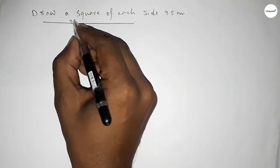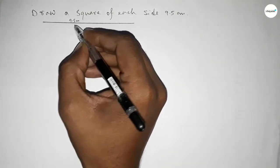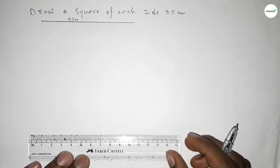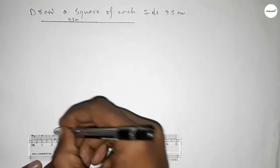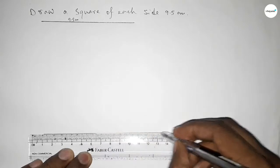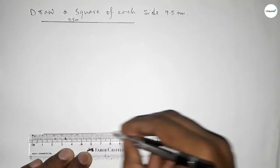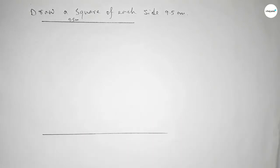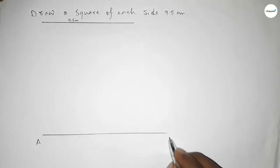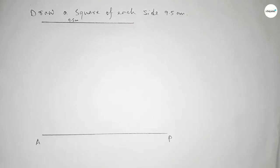This is 9.5 centimeters. Now first of all we have to draw a straight line of any length here. Drawing a line, then taking a point A and a point P.